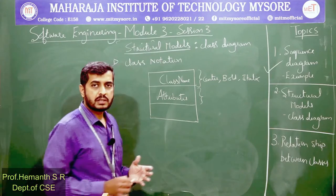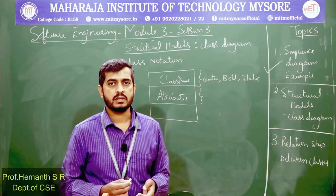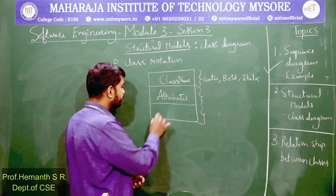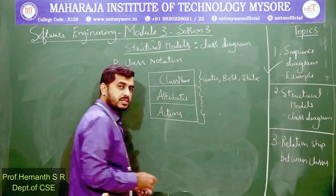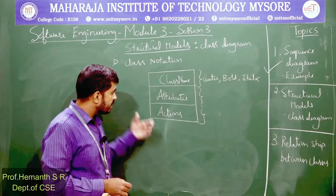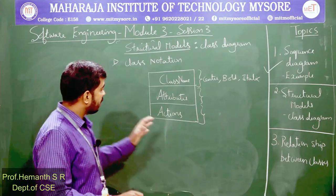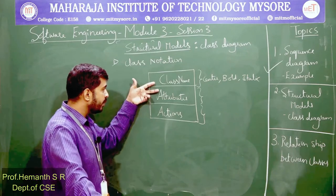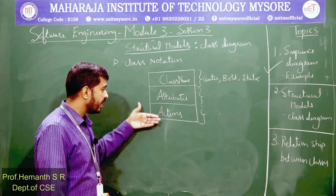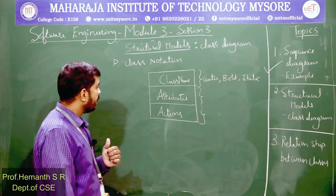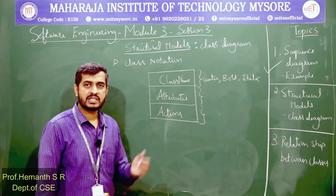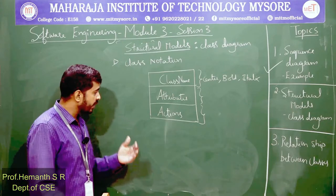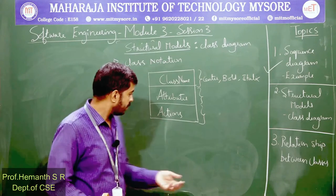Each class can perform some actions or operations, which go in the third block. This is the general form of a class: class name in the first block, attributes in the second, and actions or operations in the third. We will now create specific examples to improve clarity on how to write attributes and operations.